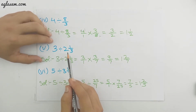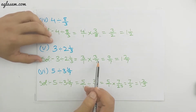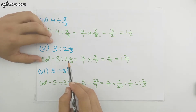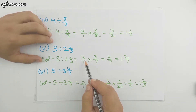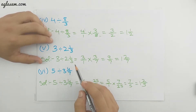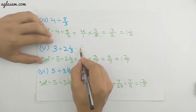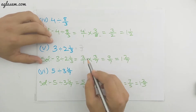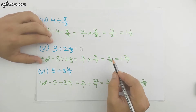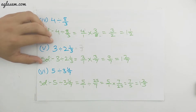The fifth part is 3 divided by 2 whole 1/3. Since 2 whole 1/3 is a mixed fraction, we change it to the improper fraction 7/3. So 3 divided by 7/3 becomes 3/1 multiplied by 3/7. We multiply to get 9/7, which is an improper fraction. We change it to the mixed fraction 1 whole 2/7.